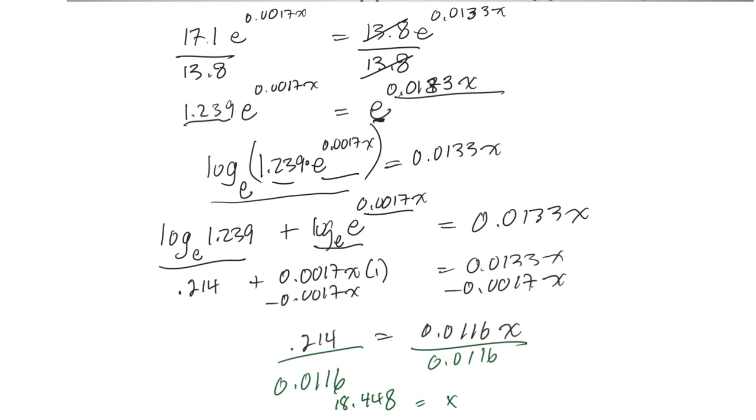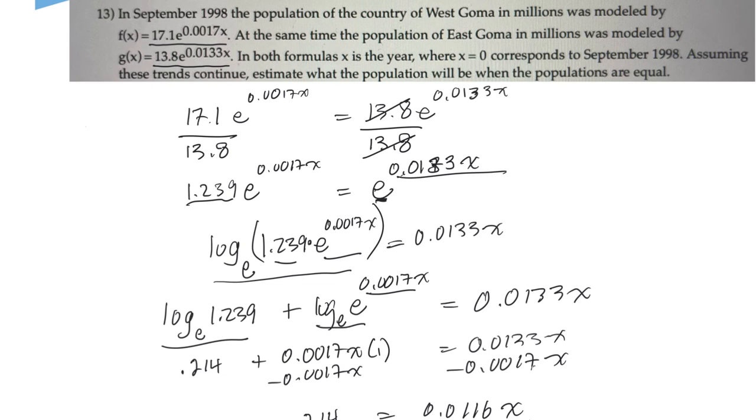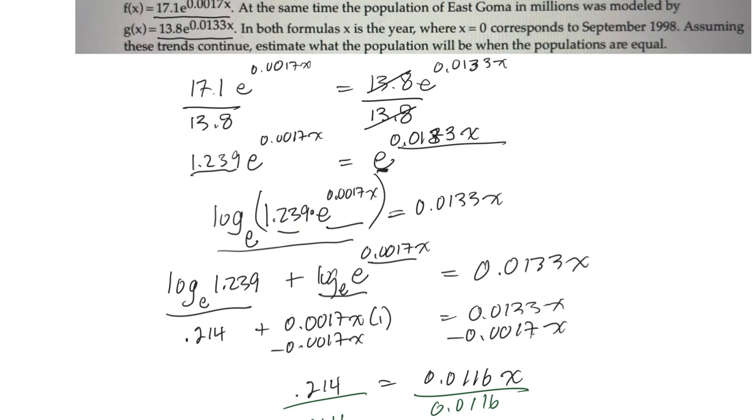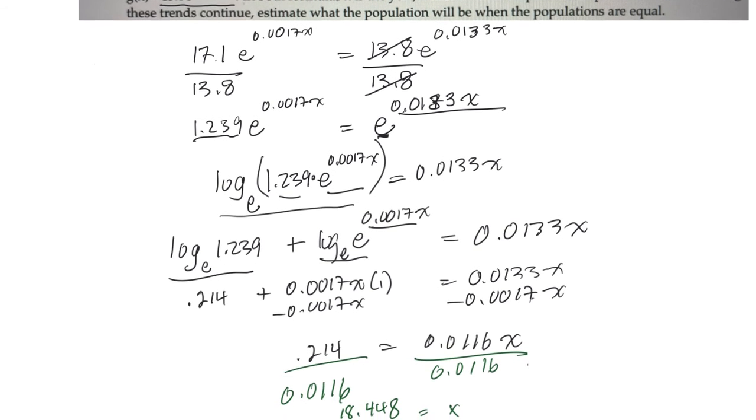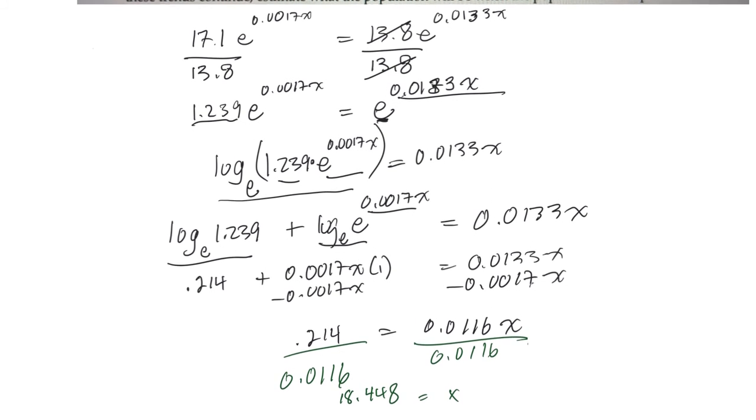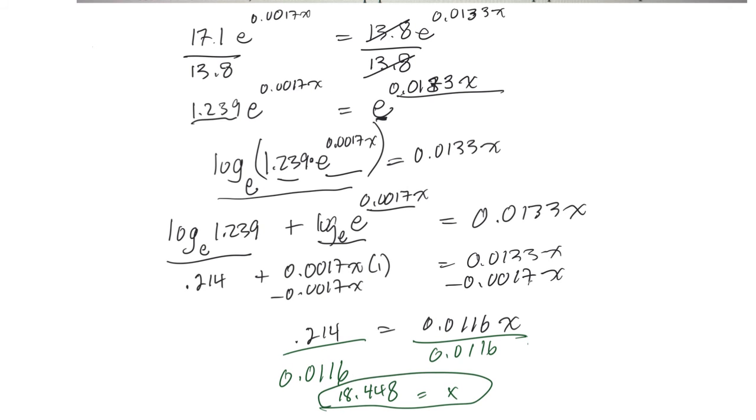Now they say, estimate what the population will be when the populations are equal. Oh, so X, that is the population, right? X is the year where X equals 0. Oh, so this means that's the year. So that means it's 18 years after 1998. So 1998 plus 18, that'll give you 2016. The year 2016, the populations will be equal.